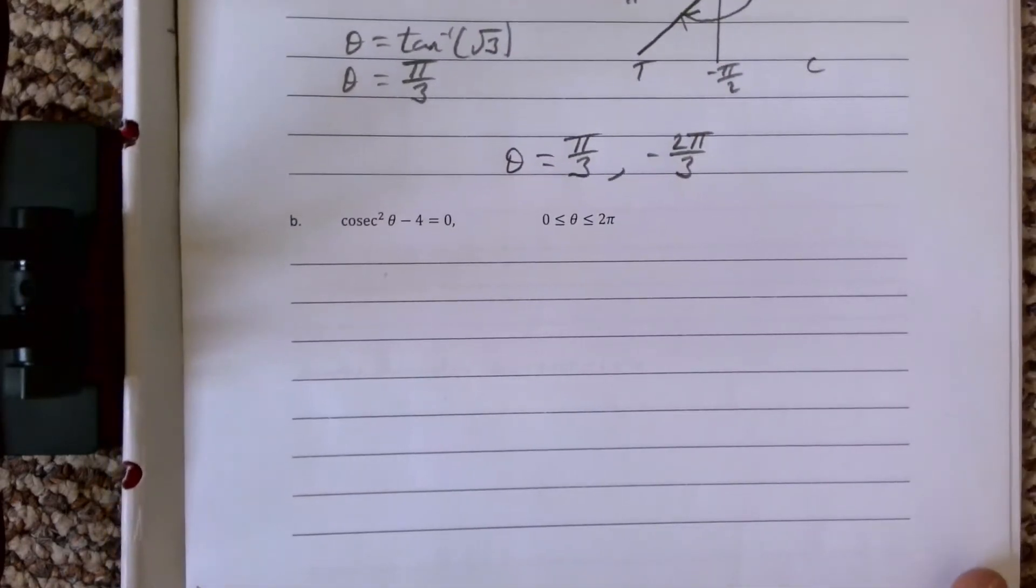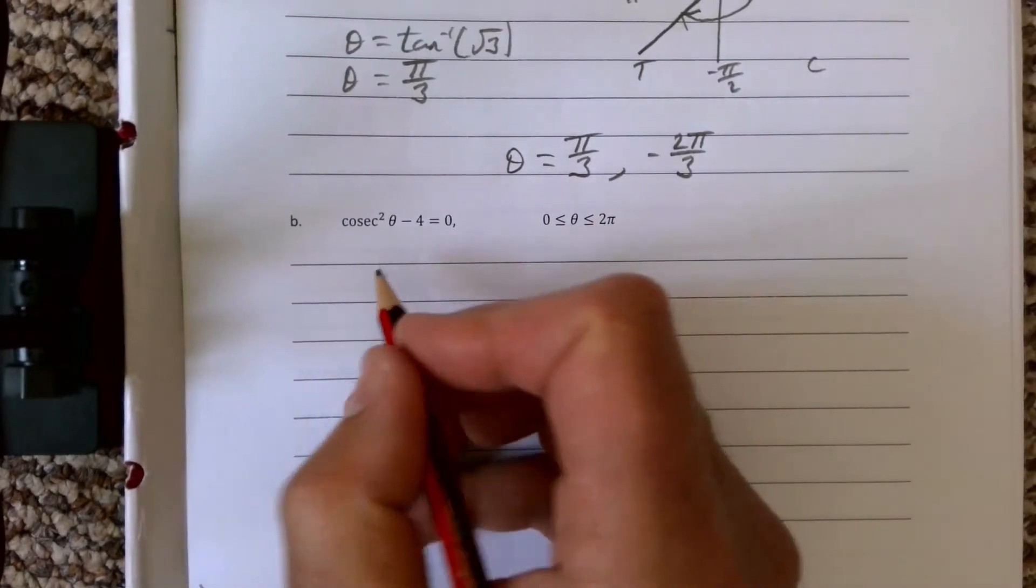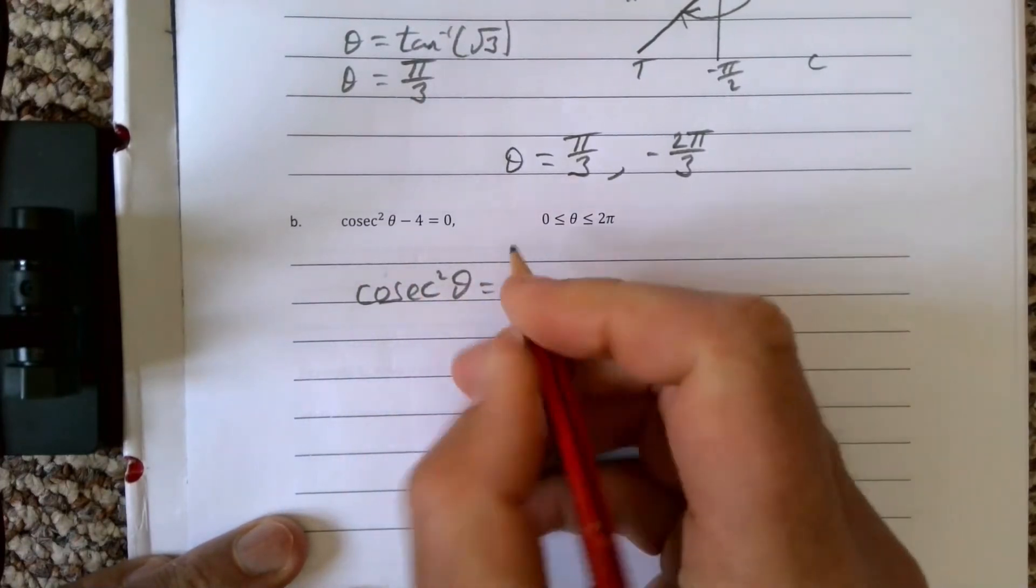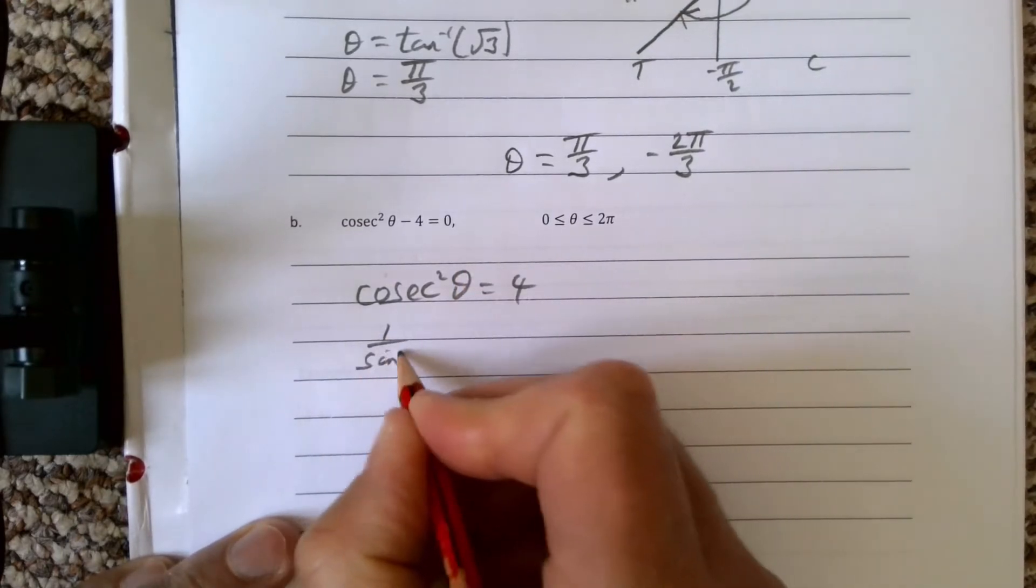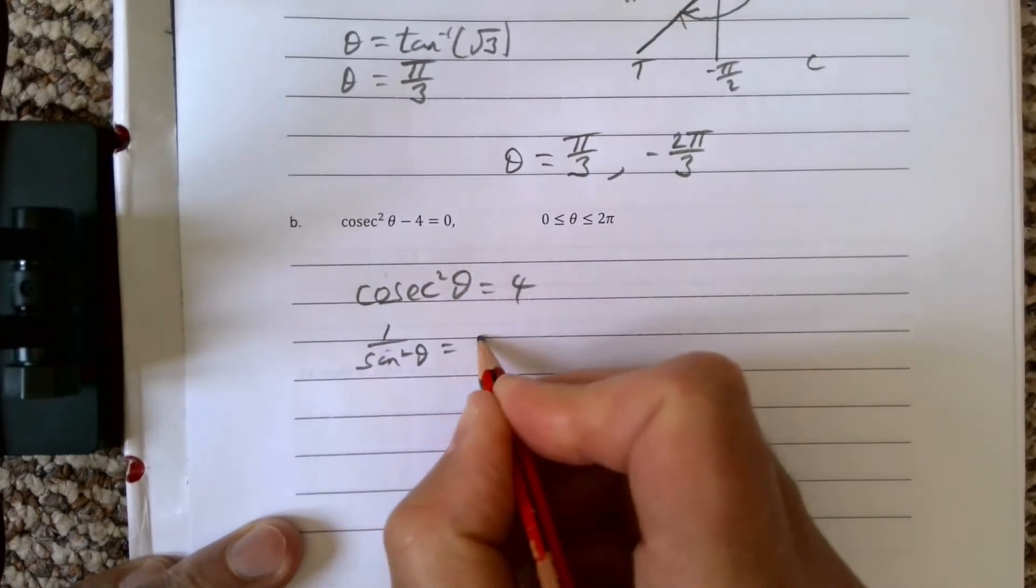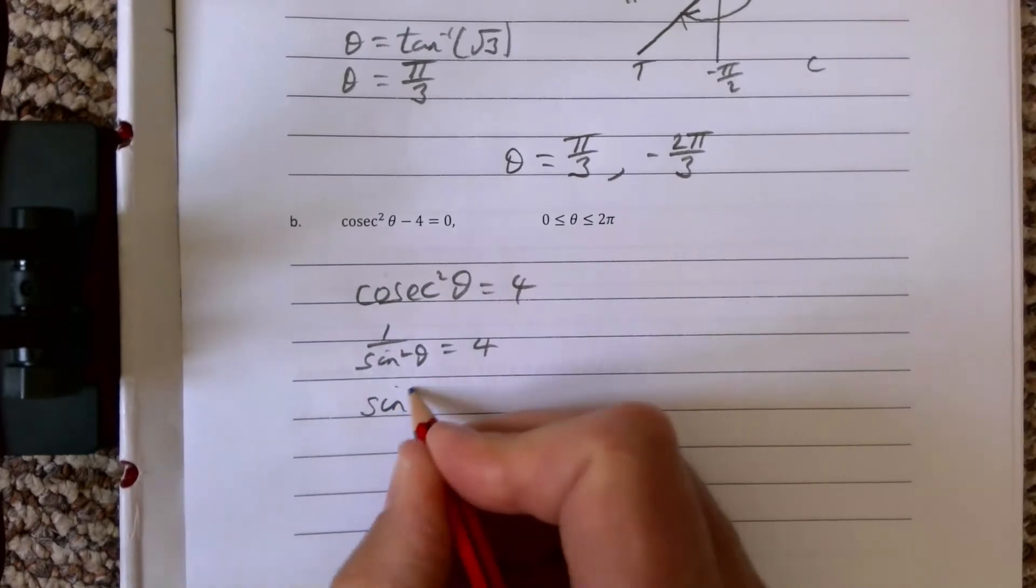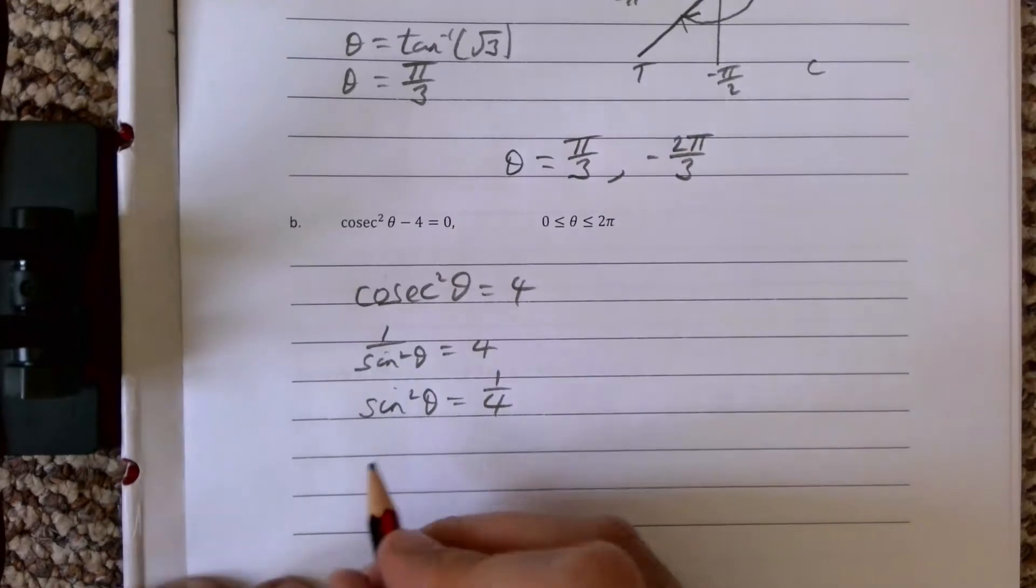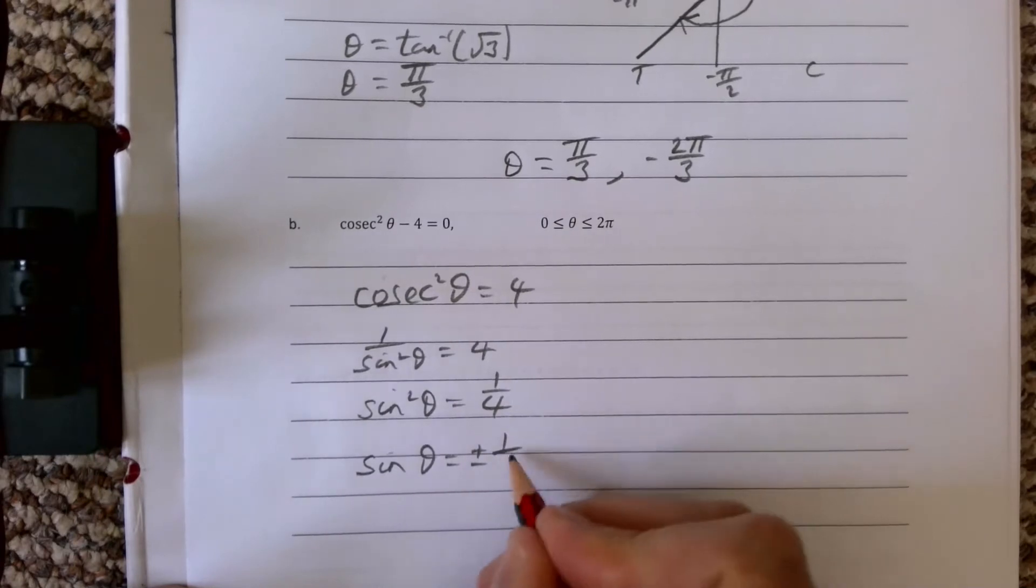Let's take a look at our next one: cosec²θ minus 4 equals 0. Rearranging this, we're going to get cosec²θ is 4. That means 1 over sin²θ is 4, because cosec is 1 over sin. That means sin²θ is 1 over 4, and we need to take the square root of that, so it's going to be sin θ is plus or minus a half.